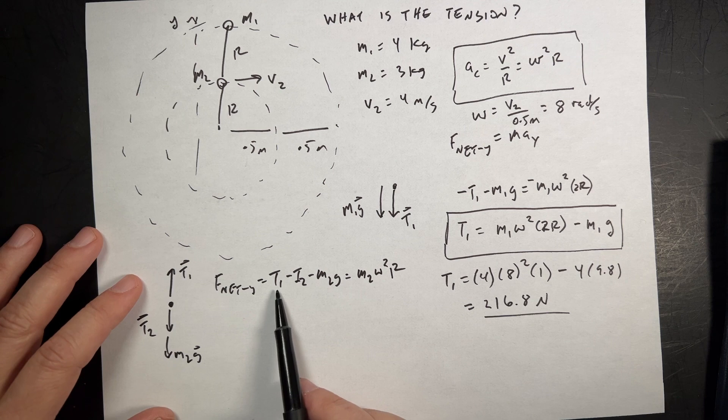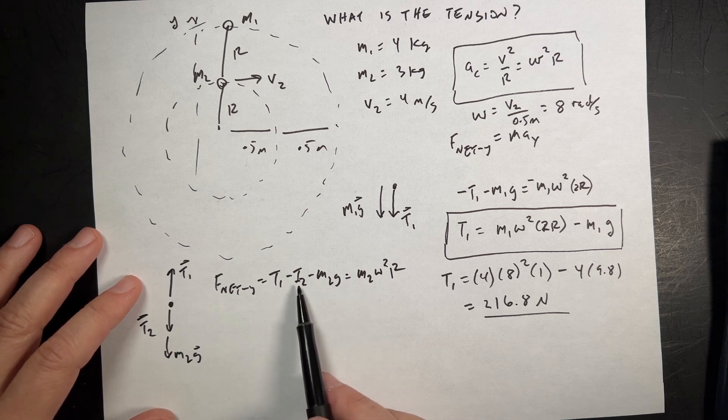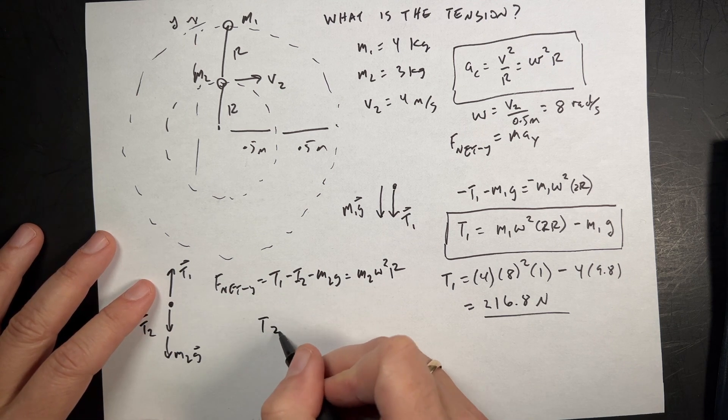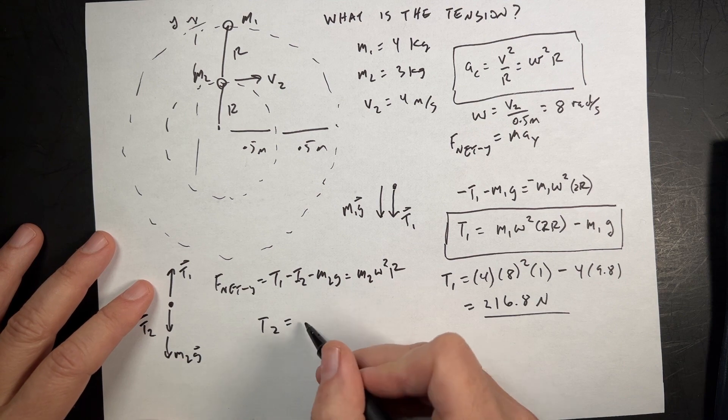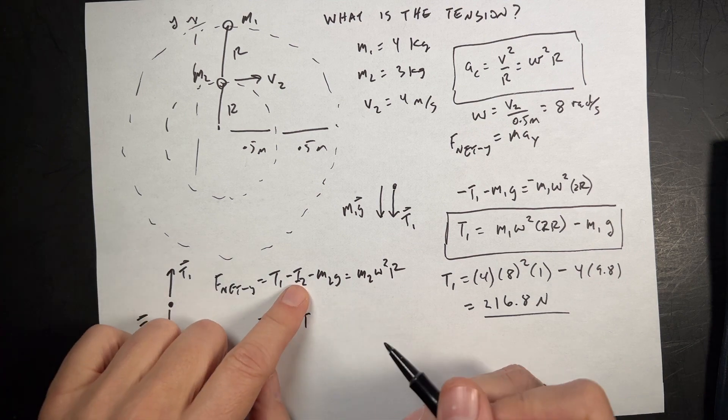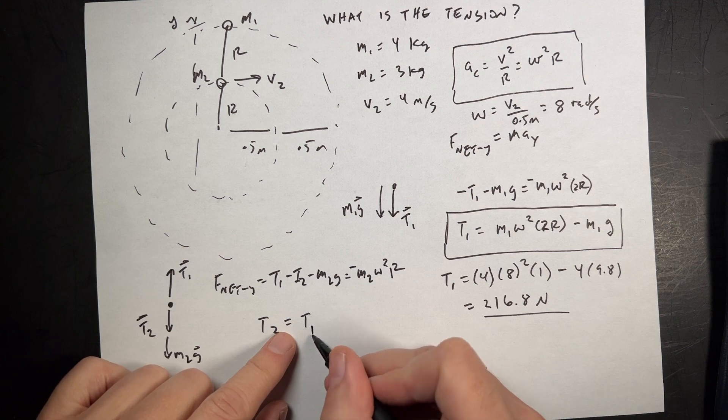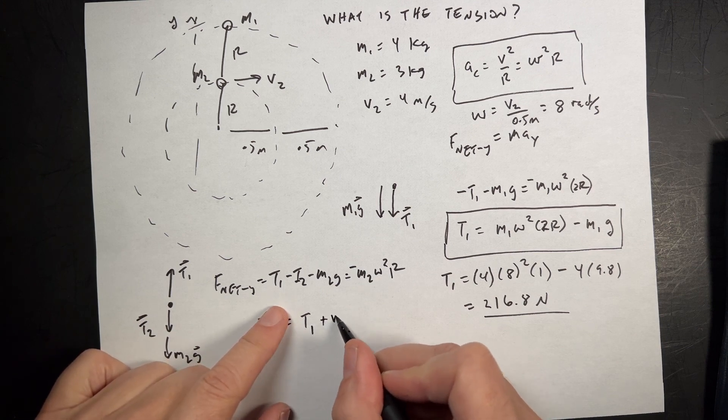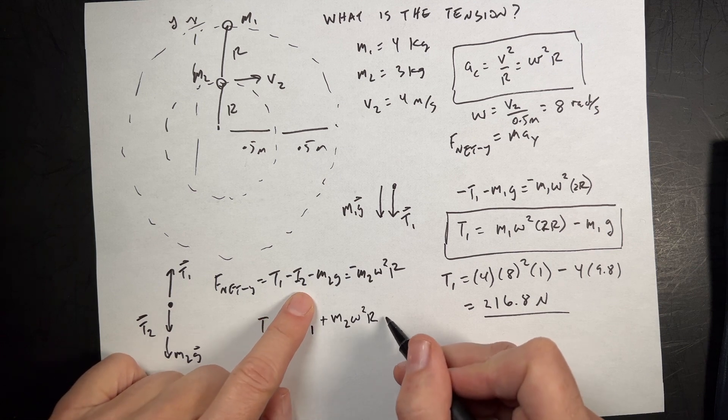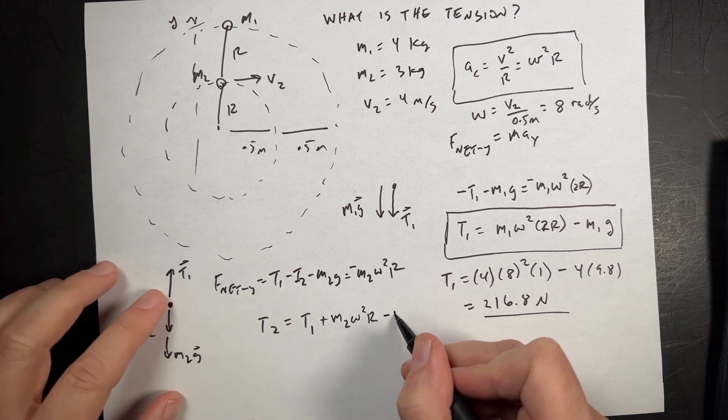Now, fortunately, I already know T1. So I can solve this for T2. T2 is going to be equal to, let's see if I move that to the other side, this is minus also, T1 plus M2 omega squared R minus M2G.